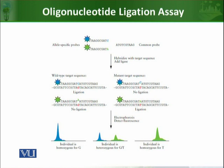To detect whether ligation has occurred or not, the probes are attached with a fluorescence indicator. We can attach a different color fluorophore to the wild type probe and another different color fluorophore to the mutant probe. Due to these different colors, we are able to know whether ligation has occurred and what kind of sequence is present.